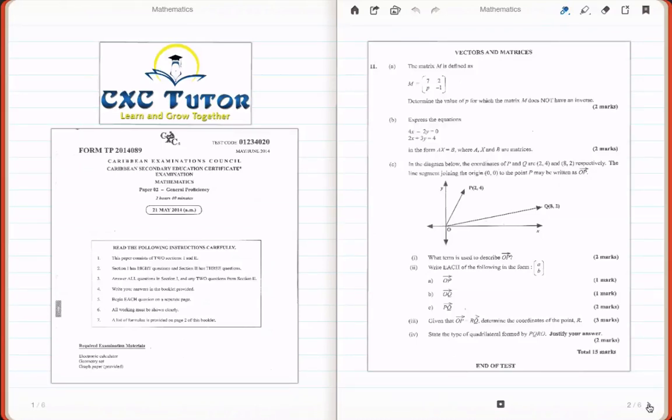Welcome everyone, this is Kevin from CXC Tutor. I'm happy today because we're finally going to go through the solution to the last question in the May-June Mathematics Paper 2. We're still in the section Vectors and Matrices, and today we're going to cover question 11, part C. Let us begin.